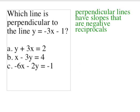And in this problem, we're being asked to find a perpendicular line to the given line, y equals negative 3x minus 1. So since our slope here is negative 3x, we want to find a line that has the slope that's a negative reciprocal of that.